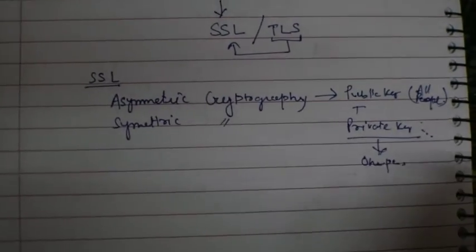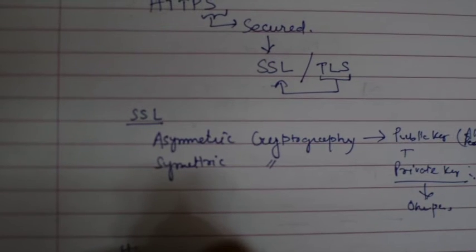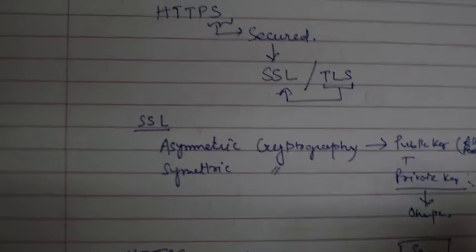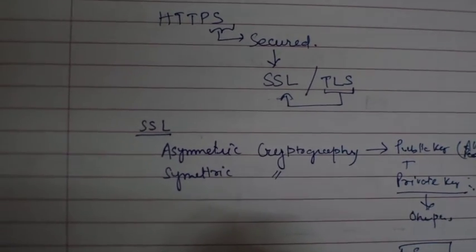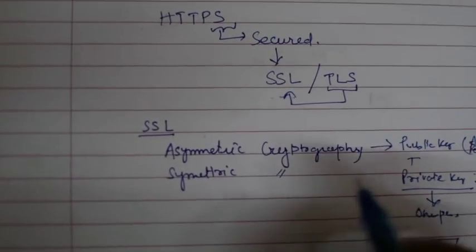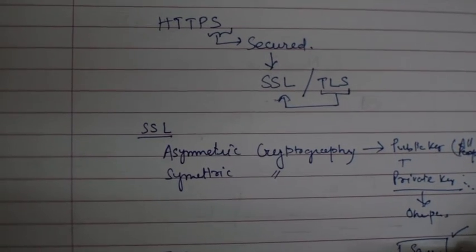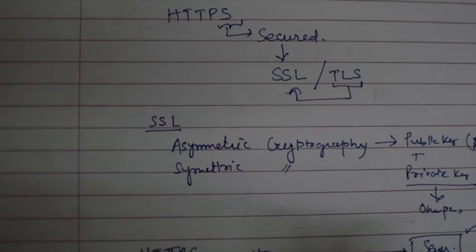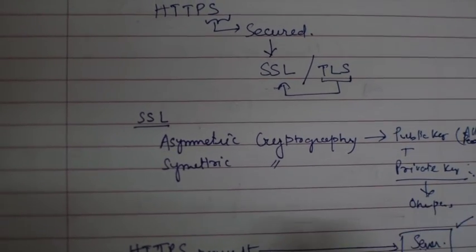Now I'll explain how both asymmetric and symmetric connections are used for SSL. When we make an HTTPS request, the request goes to the server and they need to talk privately without anyone snooping. You may have seen a green lock on top of browsers — clicking it shows a certificate. This certificate contains information confirming the server is genuine and includes the server's public key. Any client wanting to talk with the server must use that public key, which the server responds with.